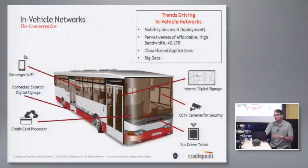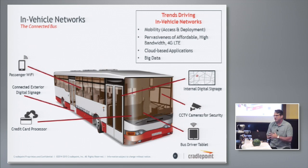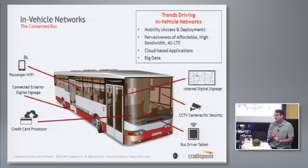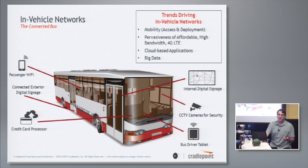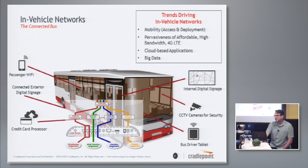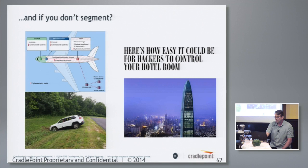Same concept applies when you talk about buses. On that bus you've got passenger Wi-Fi, credit card processing, digital signage, and security cameras. The concept of a parallel network — an application-specific isolated network — makes a lot of sense. You can do the same thing logically, and it still makes a lot of sense.